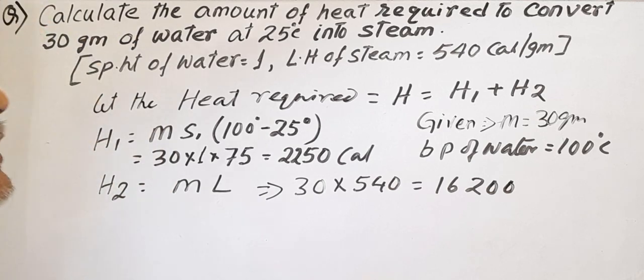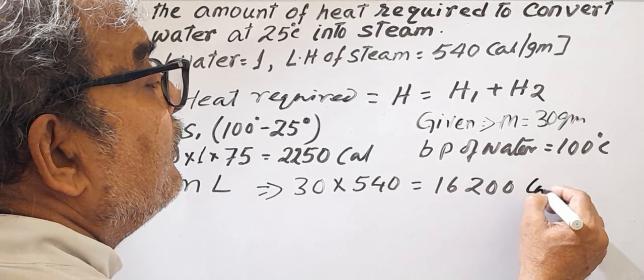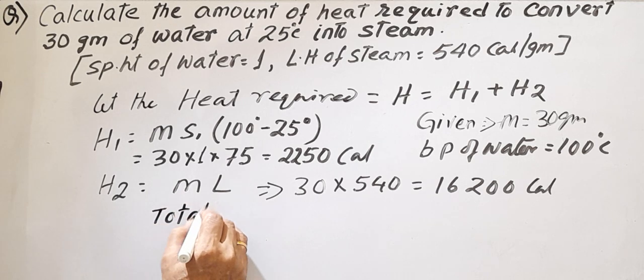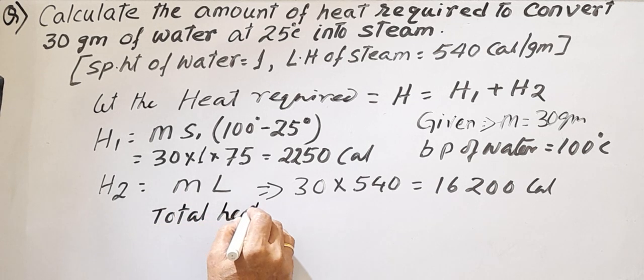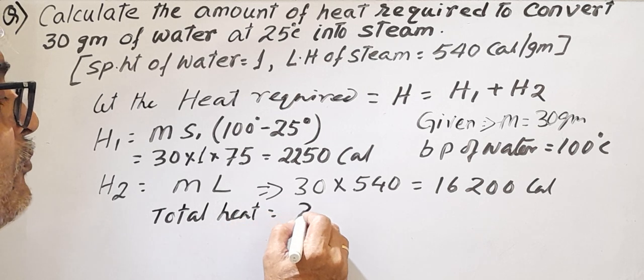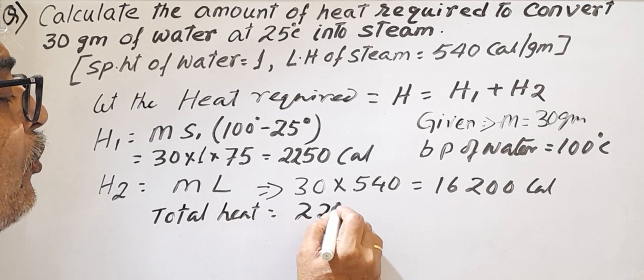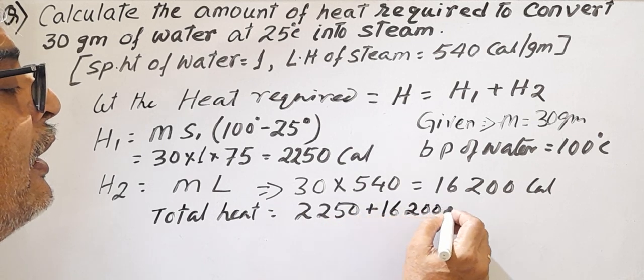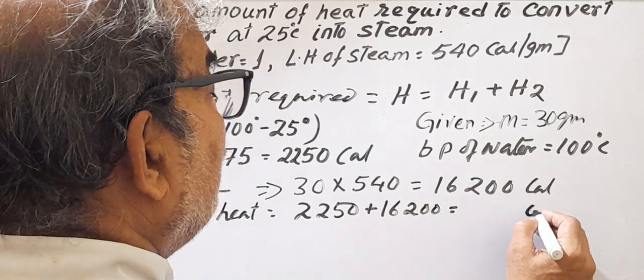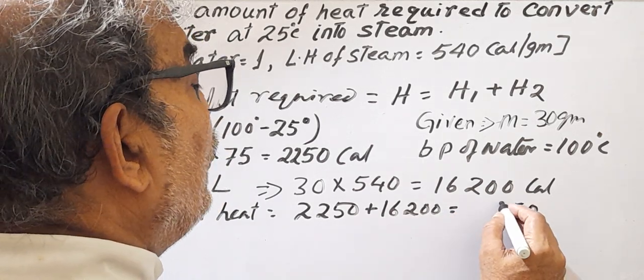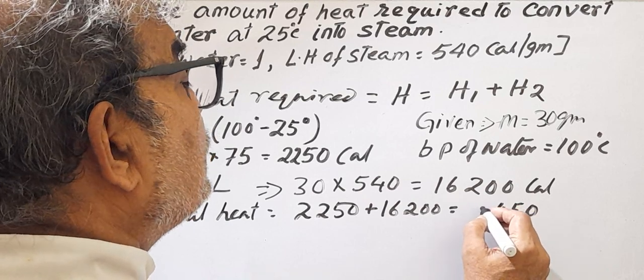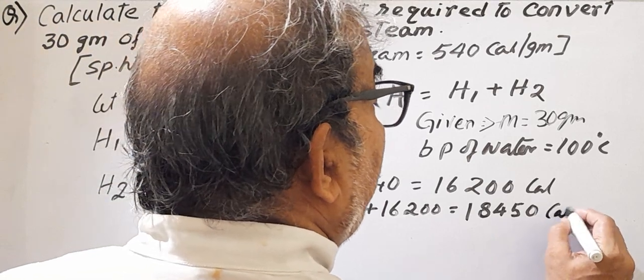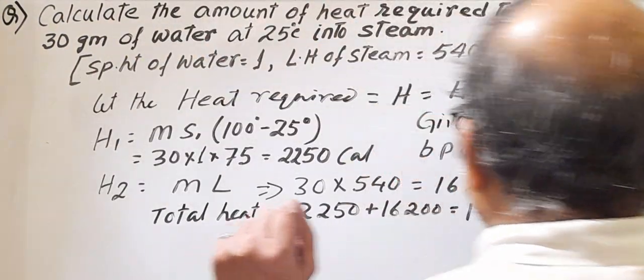Total heat equals 2250 plus 16,200, which equals 18,450 calories.